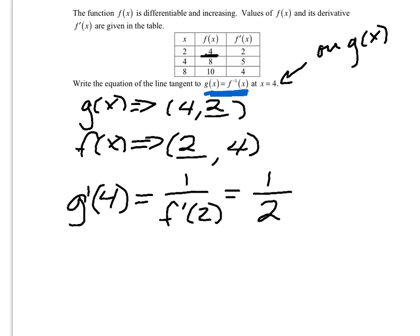It turns out 2 because I can see in the table that the slope there.